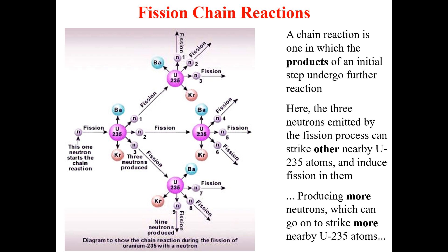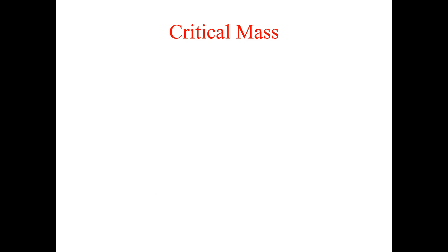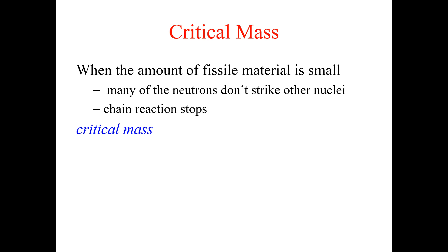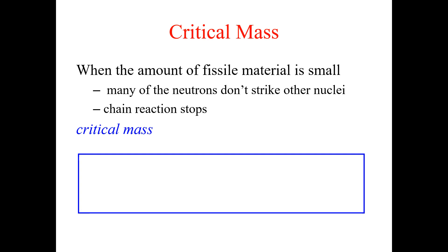This is what we call a fission chain reaction. For the fission chain reaction to occur, we need a particular amount of fissile material — a particular amount of uranium-235. When we don't have that particular amount necessary for an efficient chain reaction, many of the neutrons don't strike other nuclei, and as a result the chain reaction stops.